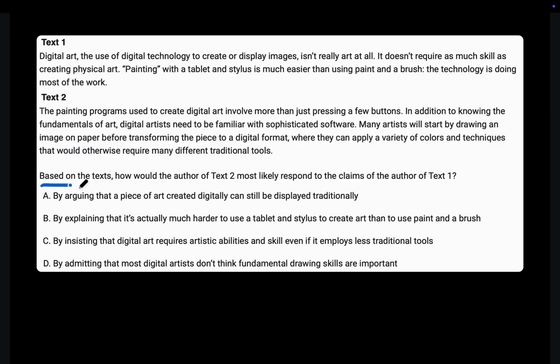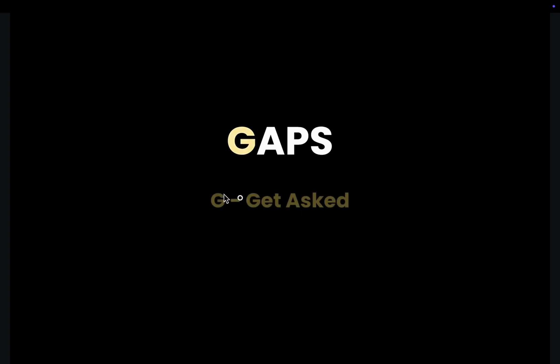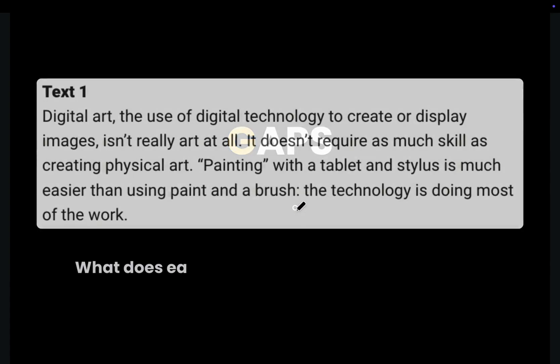Question 2. The question asks: based on the text, how would the author of Text 2 most likely respond to the claims of the author of Text 1? Let's walk through it with GAPS. G — Get Asked. Ask yourself: what does each sentence want you to understand?